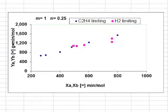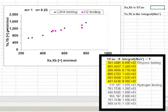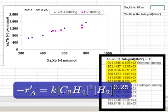The data is regressed to trial power law rate expressions and the best fit selected. In this case, the best rate expression includes ethylene concentration raised to the first power and hydrogen concentration to the one-quarter power.